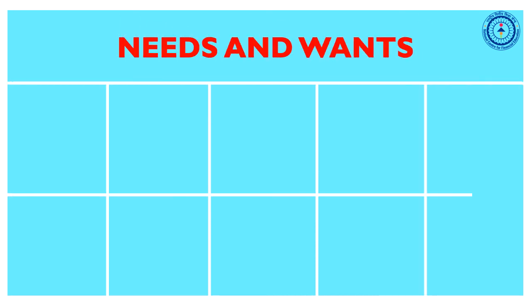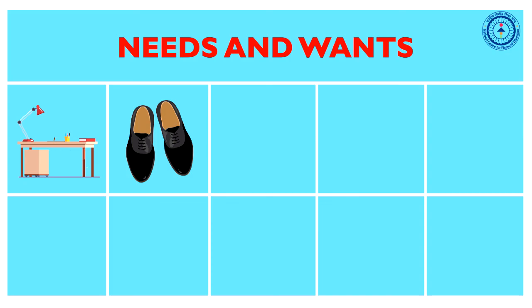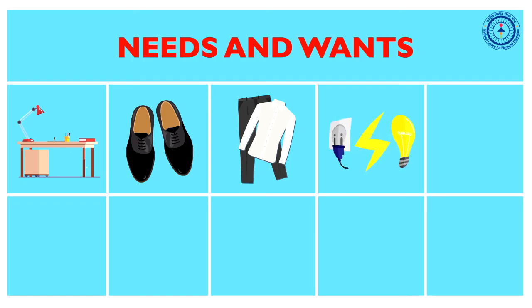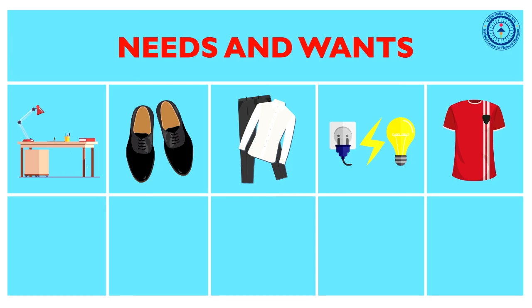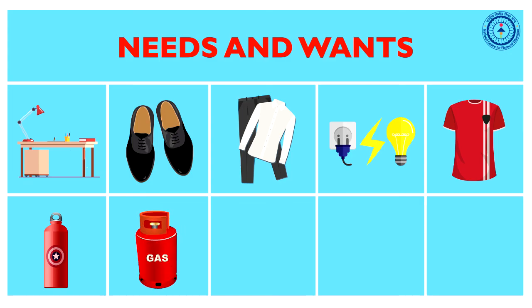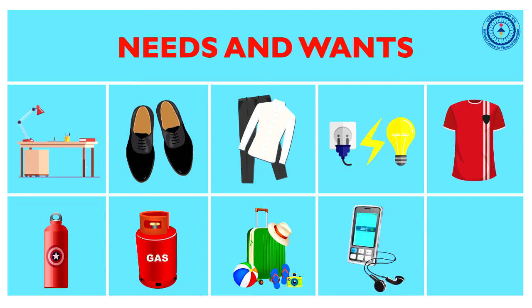Can you tell which of these are needs and which of these are wants? Study table, school shoes, designer dress, electricity, branded jerseys, water bottle, LPG gas, vacation, music downloads, expensive phone.